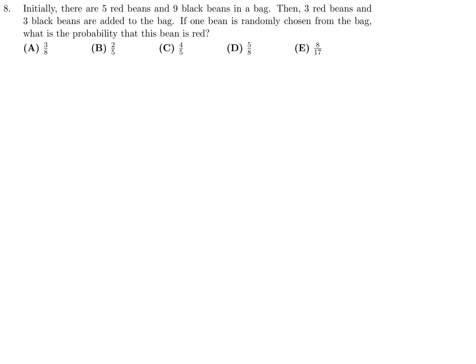Initially, there are 5 red and 9 black beans in a bag. Then 3 red beans and 3 black beans are added to the bag. If 1 bean is randomly chosen from the bag, what is the probability that the bean is red? Initially we have 5 red and 9 black, and then you're adding an additional 3 red and 3 black. So in total, we've got 8 red and 12 black. The probability is 8 red over the total, which is 8 plus 12. So it's 8 over 20. In lowest terms, dividing top and bottom by 4, you get 2 over 5. Number 8, the answer is B.